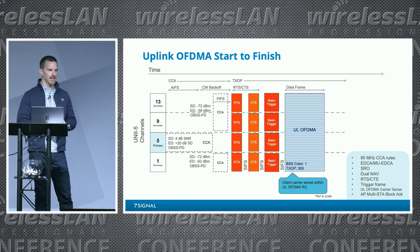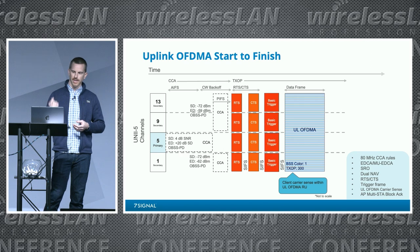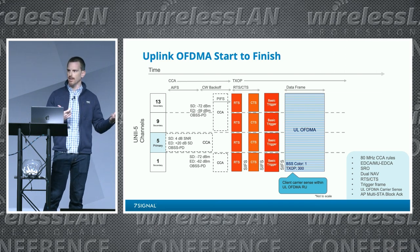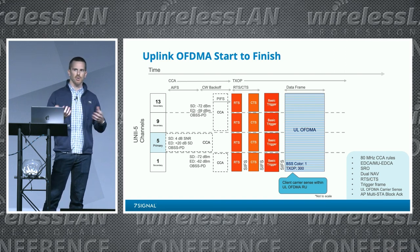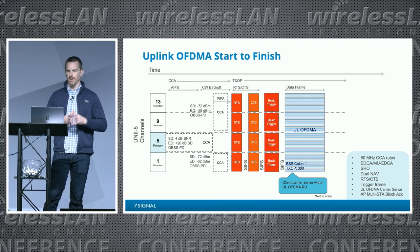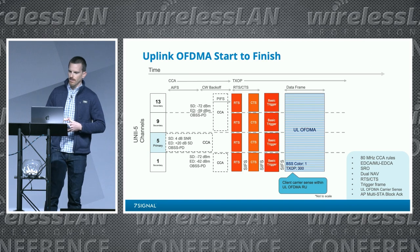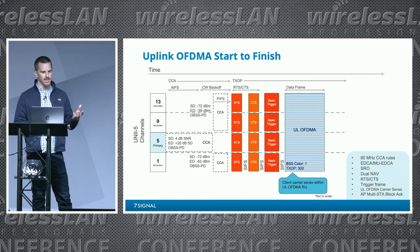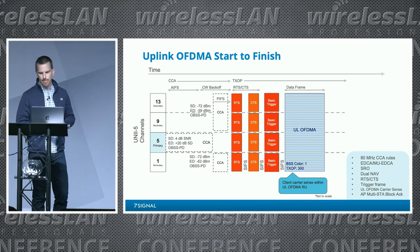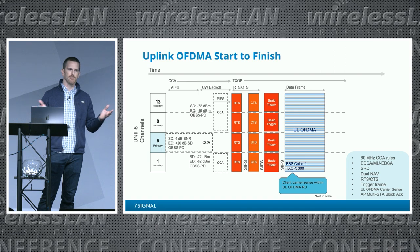This carrier sense before uplink OFDMA transmission is really a modified version - clients are really just checking two things. This is where dual NAV comes into play: the intra-BSS NAV is a non-zero value because the AP has a TXOP, so clients only check the basic NAV to see if there's any OBSS traffic going on. They only do energy detect, not signal detect, because it's hard to do within a smaller RU. If carrier sense is required by the AP, it'll say so in the trigger frame. Usually it's determined based on the length of the TXOP - the longer it is, the more likely carrier sense is required.